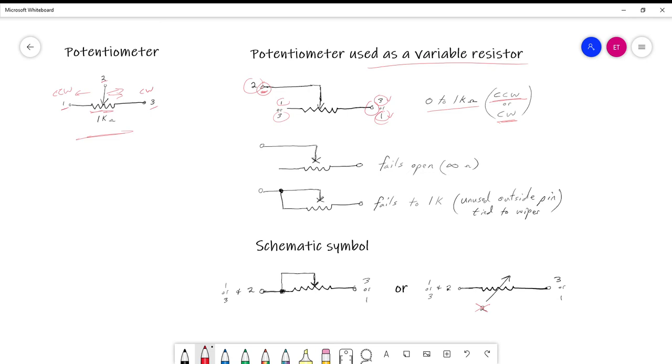The reason is one of the common failures for a potentiometer is right here where the wiper can lose contact with the fixed resistance. It can get dirty, it could break, it could just in some way have a bad connection or lose contact altogether.